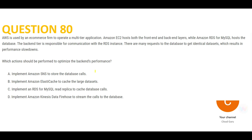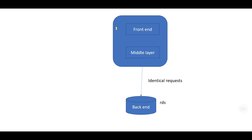Let's look at this question. There is an application with three layers: Layer 1, Layer 2, and Layer 3. Layers 1 and 2 are on EC2, and Layer 3 is on an RDS database — an AWS product. The middle layer is the only one that can talk with the backend layer.